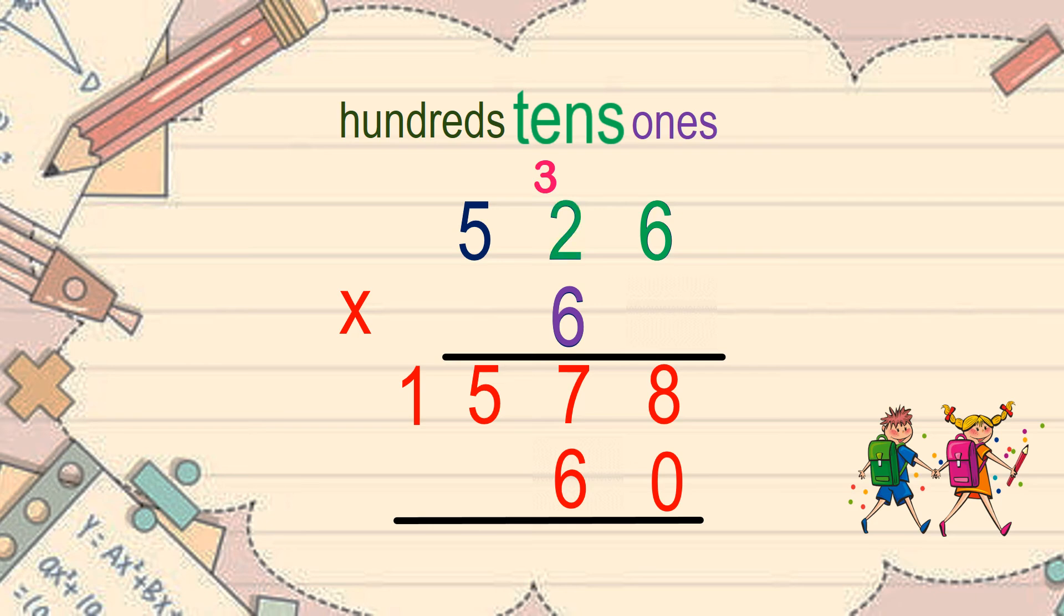Then we have 2 times 6, which is 12. Then add 3. Altogether, we get 15. Give 5 and carry over 1 to the hundreds place.